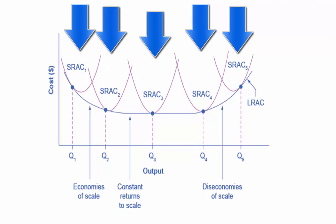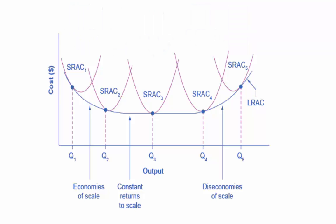The five different short run average cost curves each represents a different level of fixed cost from the low level of fixed cost at short run average cost curve number 1, SRAC 1, to the high level of fixed cost at SRAC 5.